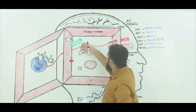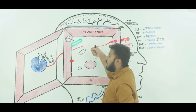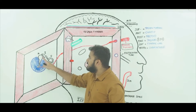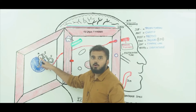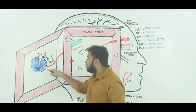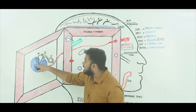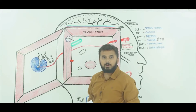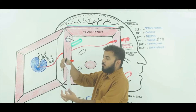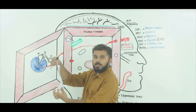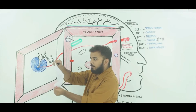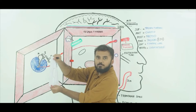Whenever this tensor tympani will contract, the pressure is imposed upon the malleus bone. As malleus is attached to the tympanic membrane, the pressure is in turn imposed upon the tympanic membrane. Normally the tympanic membrane is loose, but whenever the tensor tympani contracts, the tympanic membrane becomes stiff.